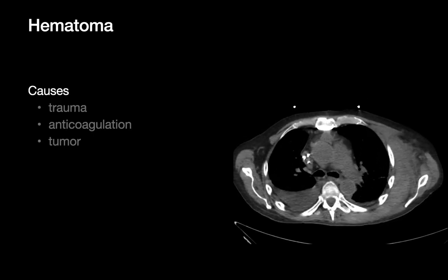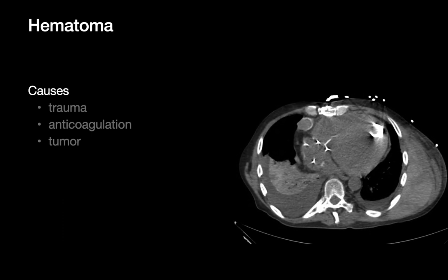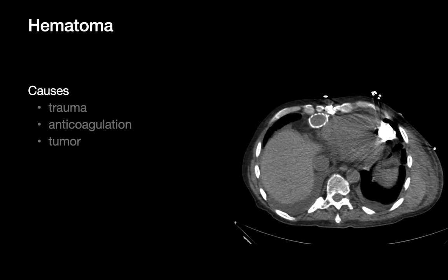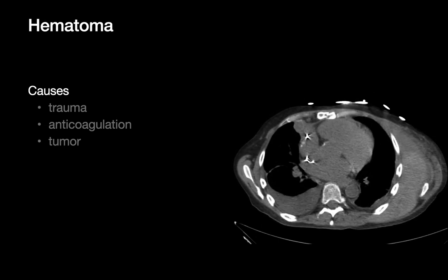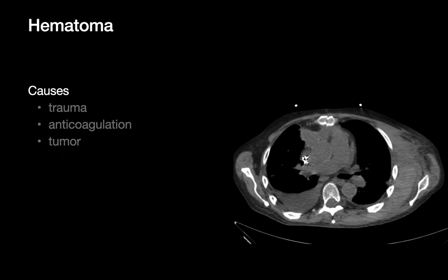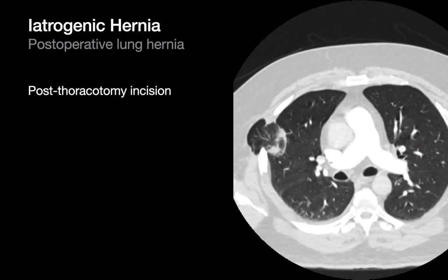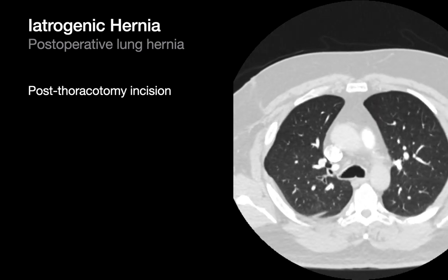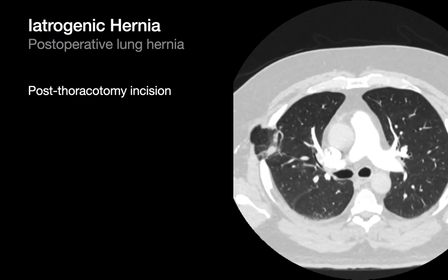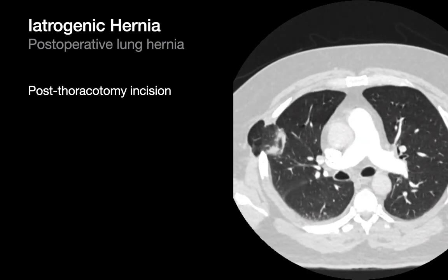Particularly with trauma patients, acute chest wall hematomas will usually appear hyper-attenuating to muscle, especially if fresh, and are often asymmetric — so comparing one chest wall to the other is sometimes helpful. Iatrogenic hernias may happen in folks who've undergone a prior thoracotomy, where you'll perhaps see a portion of lung pooch out through the rib cage into the deep chest wall between two ribs.